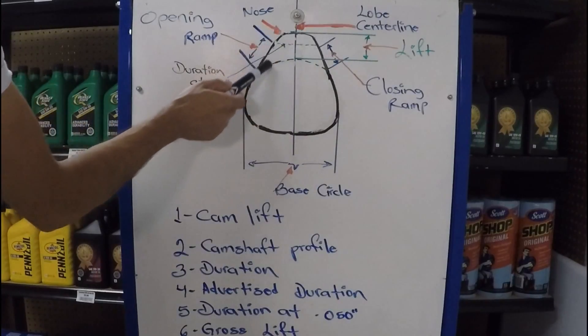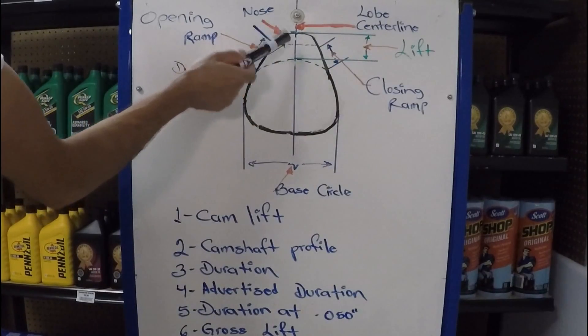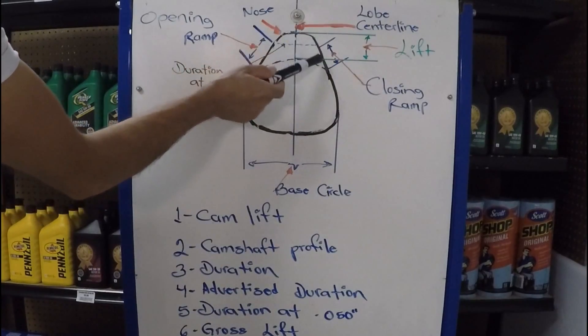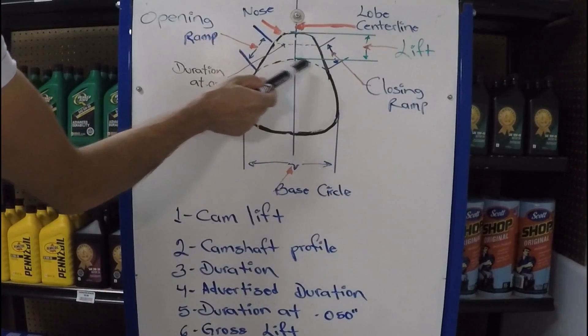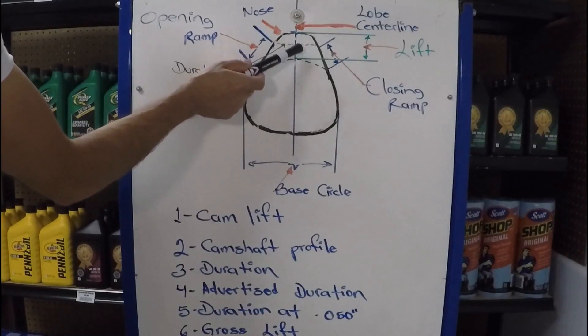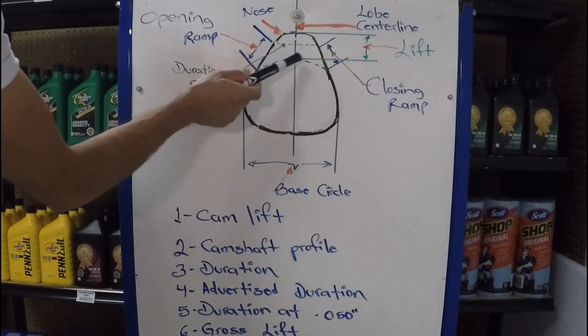That is how much the lobe is going to push either the lifter, rocker arm, or valve open as it rotates. That is the lift from here to here. Now, when it comes to camshaft lift, there's something really important to consider.